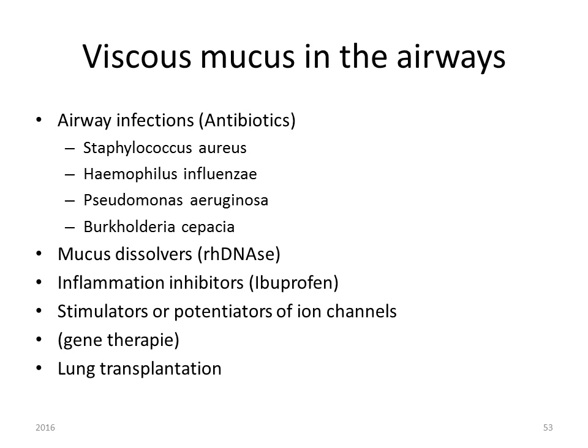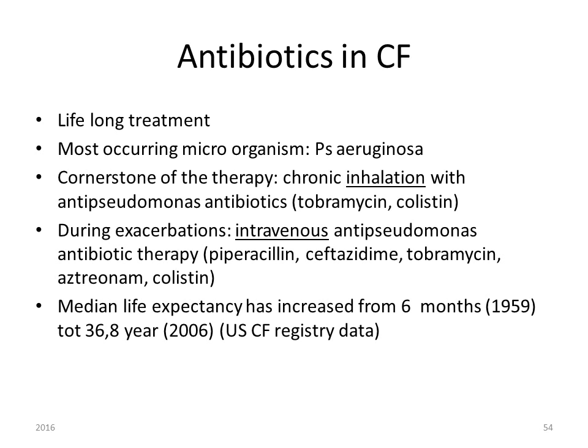Finally, we can offer patients a lung transplantation. Antibiotic treatment is one of the mainstay treatments in cystic fibrosis — it is a lifelong treatment because of chronic lung colonization. The most common microorganism is Pseudomonas aeruginosa, and the cornerstone of therapy is chronic inhalation with antipseudomonal antibiotics such as tobramycin and colistin. During exacerbations, patients need intravenous antipseudomonal antibiotics such as piperacillin, ceftazidime, tobramycin, aztreonam, or colistin. Due to antibiotic treatment, median life expectancy has increased from 6 months in 1959 to almost 37 years in the US.